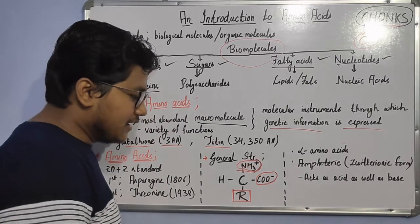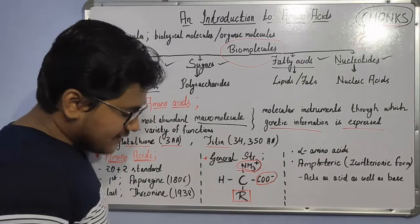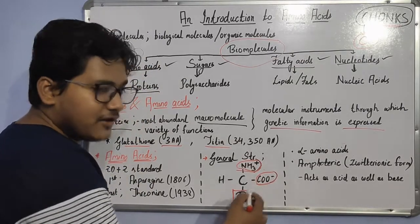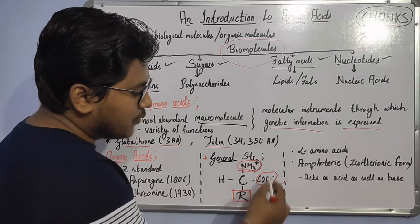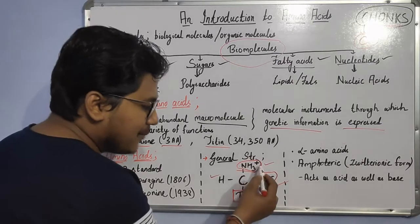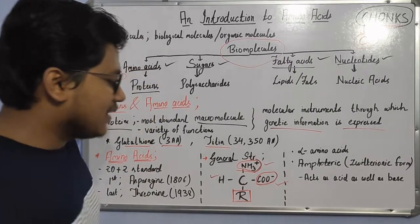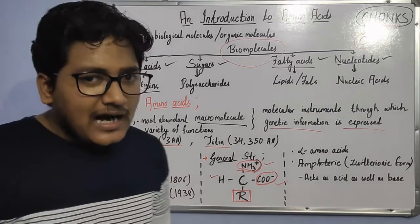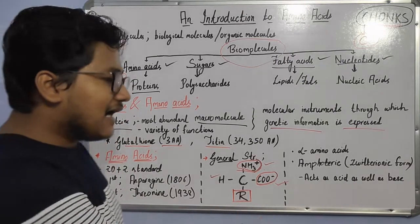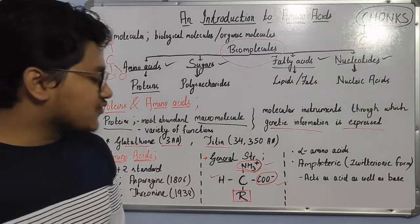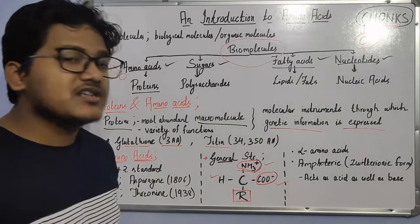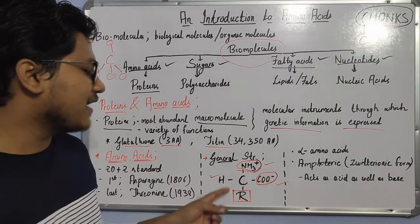Looking at the general structure of an amino acid, there is a central carbon atom whose four bonds are occupied by: one carboxyl group, one amino group, a hydrogen atom, and an R group. Since these are amino acids, we have an amino group and a carboxyl group — the acidic group — along with a hydrogen atom and the R group. The R group is the most crucial part of the general structure because it can vary significantly in size and structure, and it determines the properties of the protein — its solubility, charge, polar or non-polar nature.